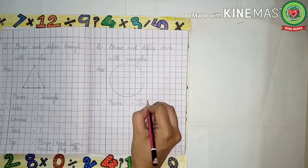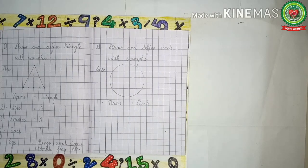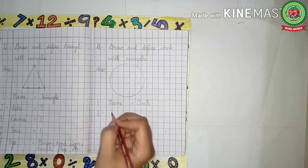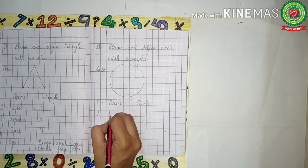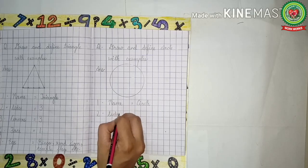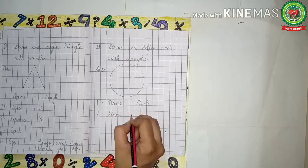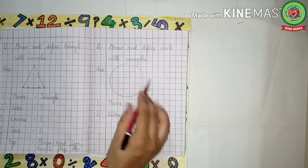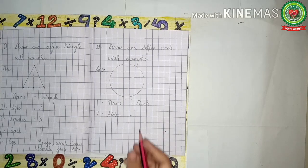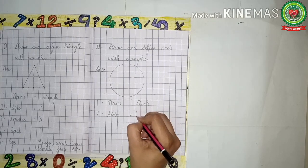What is the name of the figure? Circle. So we will write 'circle' — C-I-R-C-L-E. Leave one line. Two dot: sides — S-I-D-E-S. Now how many sides does a circle have? Do you find any side in the circle? No. So circle has no sides — we will write zero.